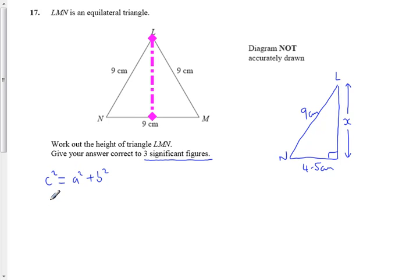So for us in our question here, 9 squared is equal to 4.5 squared plus x squared, or we can rewrite that equation, which is x squared equals 9 squared minus 4.5 squared.